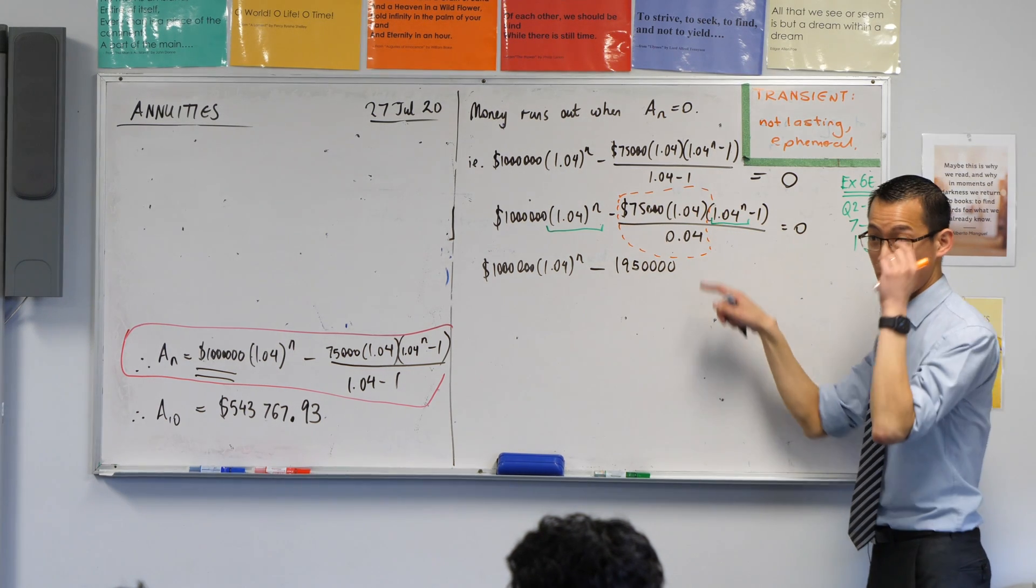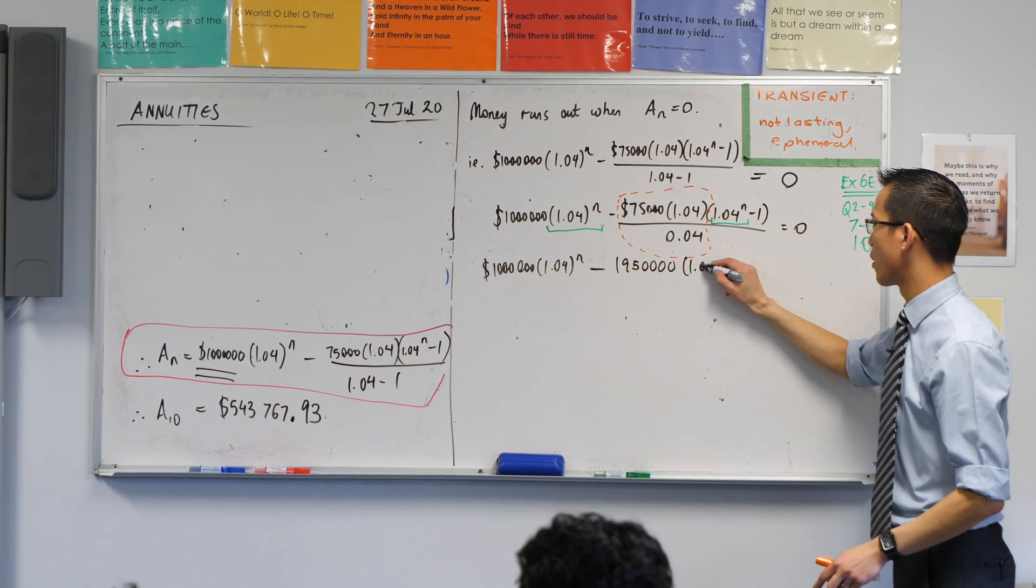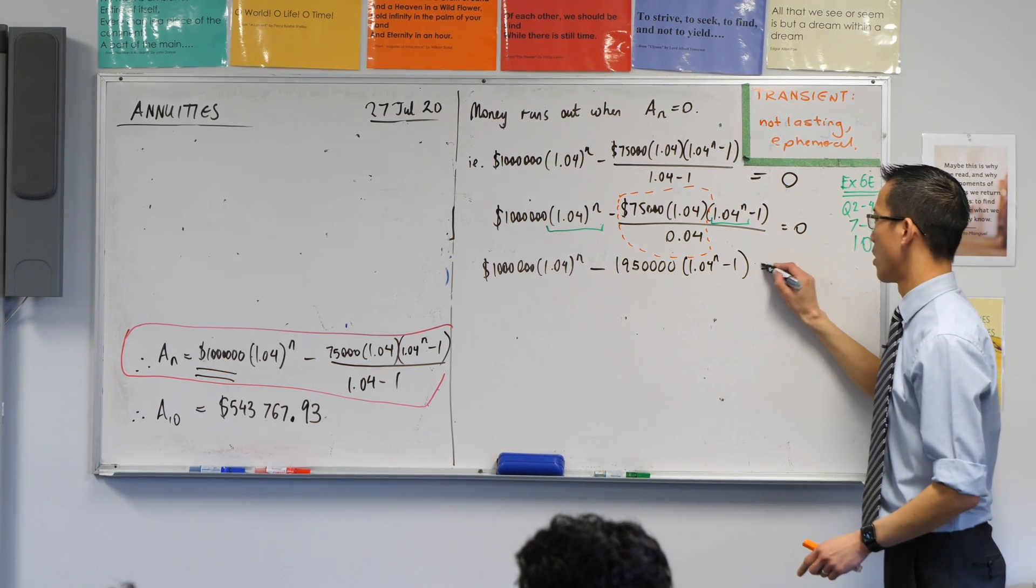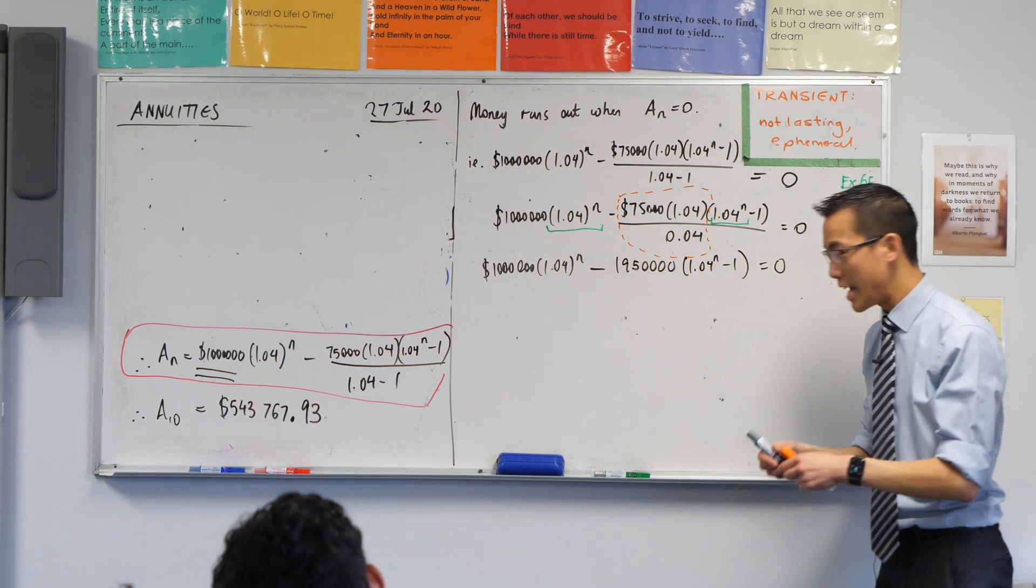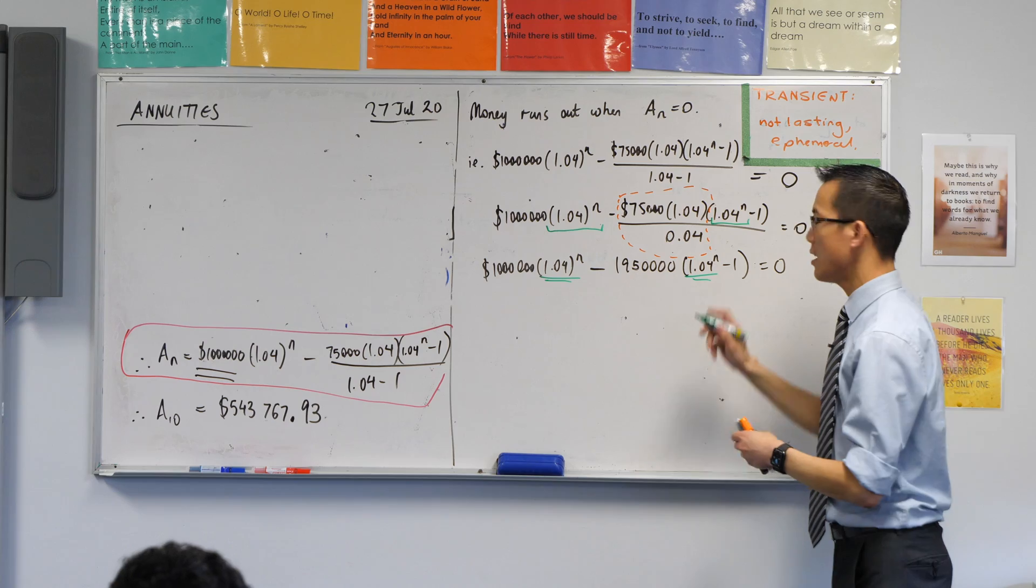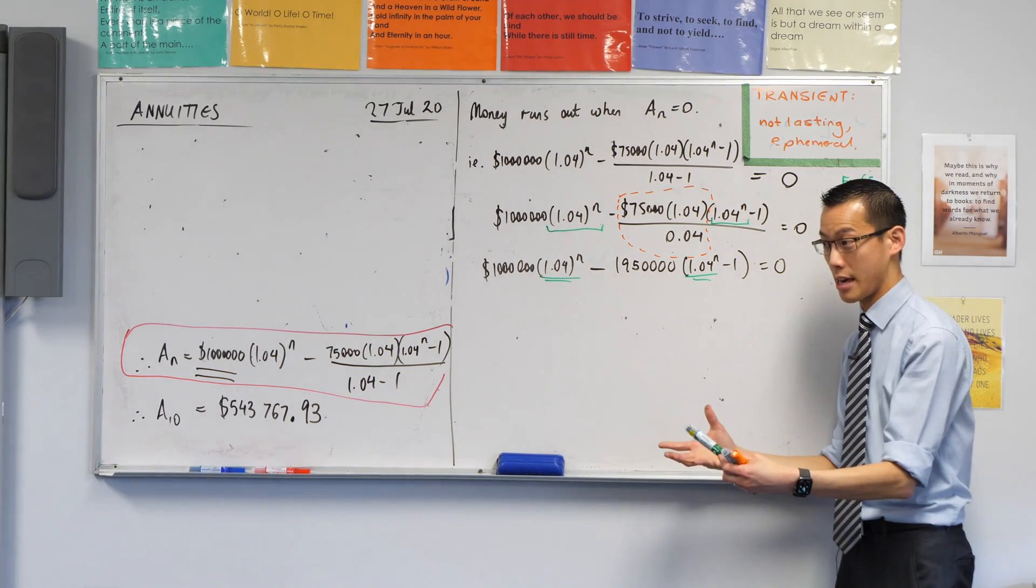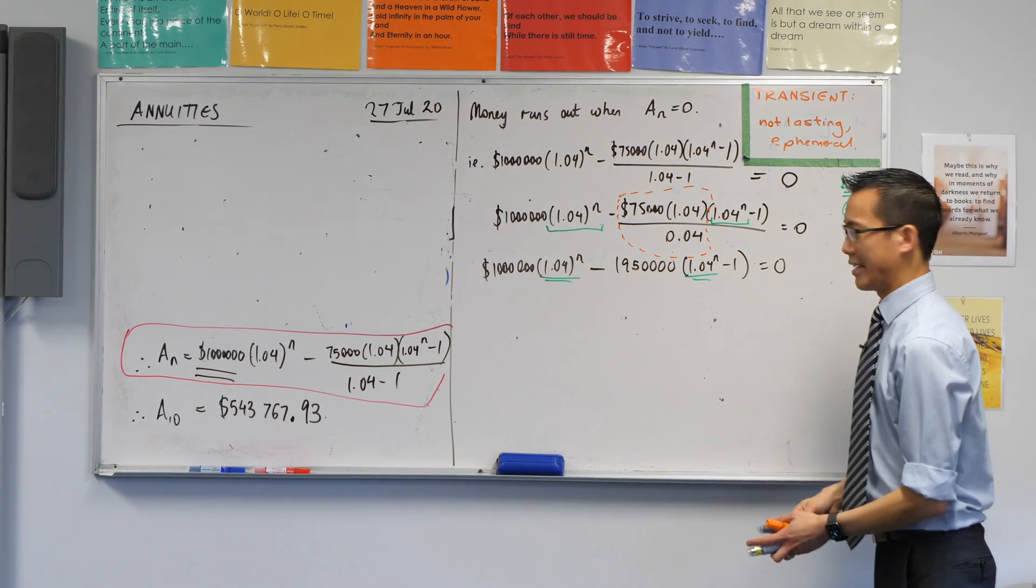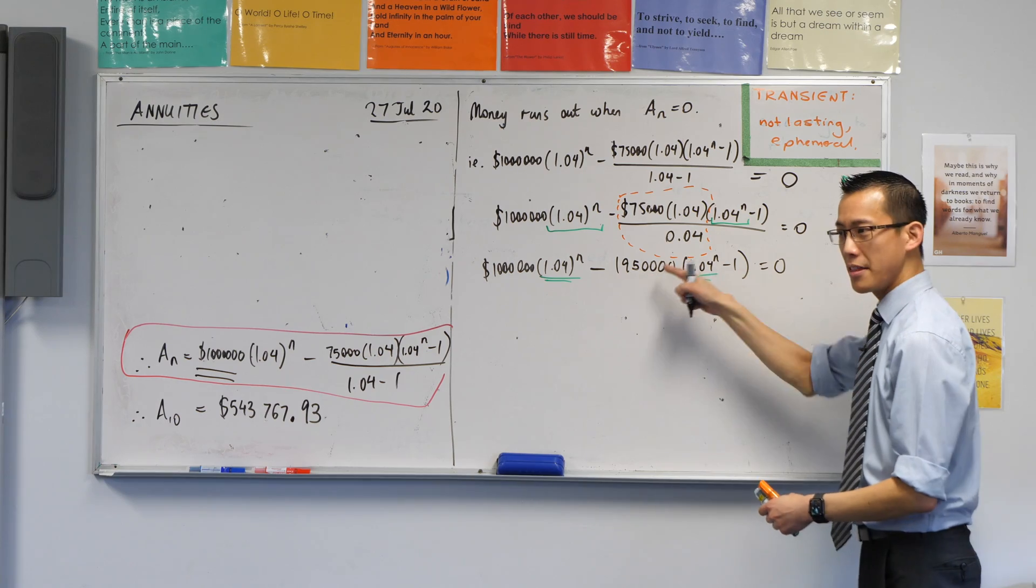Now this replaces all the stuff in my orange box, so now it's 1.04 to the n minus 1.95 million equals 0. I'm keeping my eye on these guys here. They're the things that I want to collect together. And you're like, oh, I can just expand this, can't I? This guy here can just expand. I've got 1 million lots of this thing.